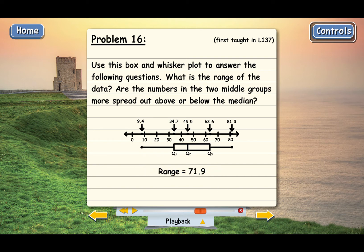Now we need to look at the two middle groups of data, that's going to be group 2 and group 3, so the groups between Q1 and Q2 and Q2 and Q3. Now notice that the distance between Q2 and Q3 is much greater than the distance between Q1 and Q2.